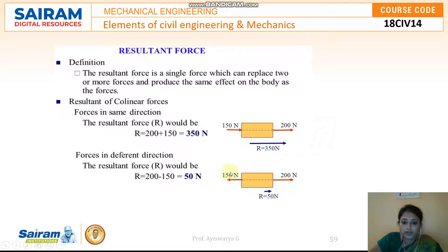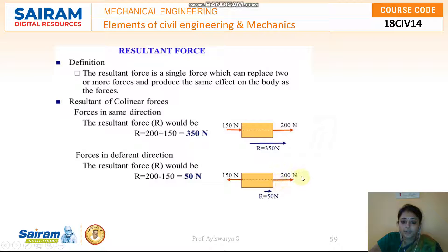The forces can also act in different directions. You can take one direction as positive and the other as negative. In the first example, both forces are in the positive direction: 150 + 200 = 350 newton. In the second example, 200 newton is in one direction and 150 newton in the opposite direction, so 200 minus 150 gives 50 newton as the resultant.